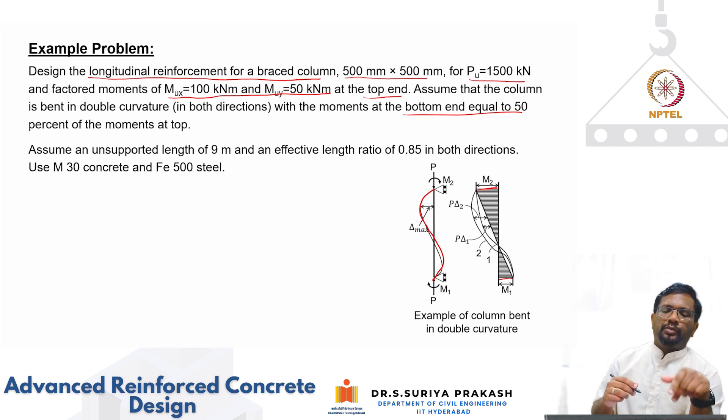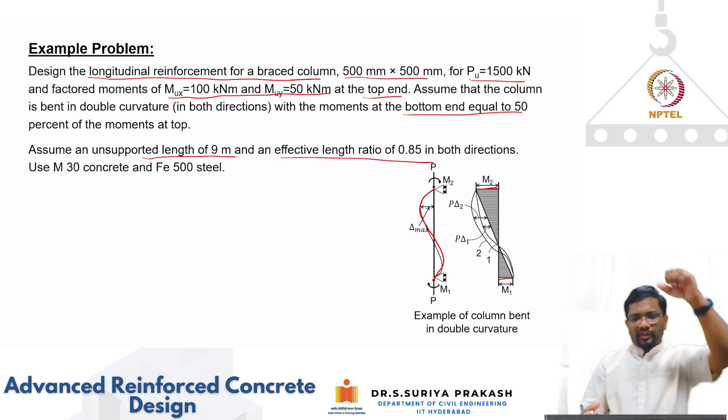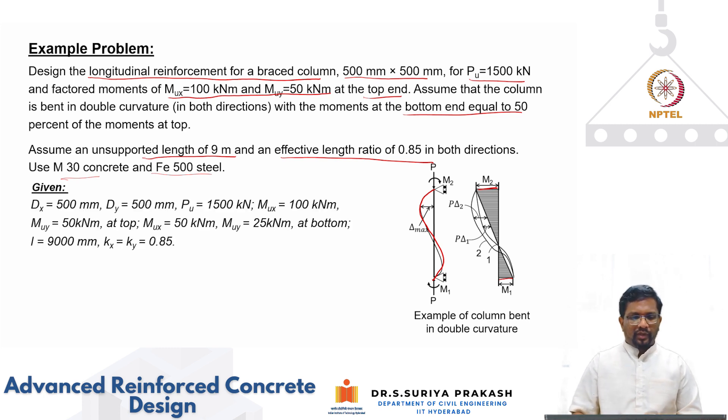At bottom mu_x is going to be 50 kNm and mu_y is going to be 25 kNm. Here you see it is a slender column, unsupported length of 9 meters and effective length factor of 0.85 that means it is a pinned pinned column and it is a braced column. There is no p-delta effect. We are going to use M30 concrete and Fe 500 steel.